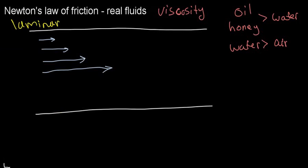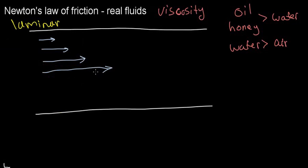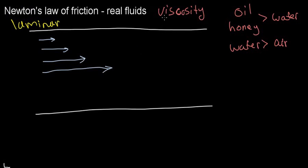Going back to Newton's first law: if there is relative motion between two adjacent layers — one moving faster than the other — they're going to have friction. This friction between two different layers of flow moving relative to one another is the idea of viscosity. It relates to the concept that an object wants to stay in motion unless interrupted, and viscosity is that interruption. This is why fluids resist motion, and this is the idea of real fluids. Essentially all fluids are real — there is no ideal fluid, just like there is no ideal gas.